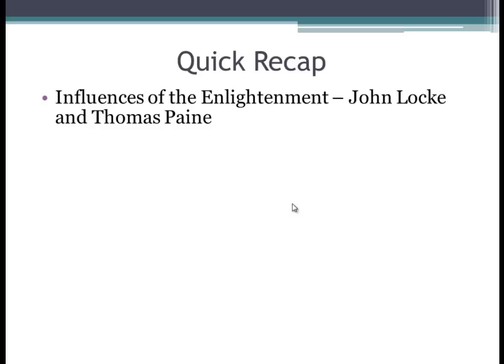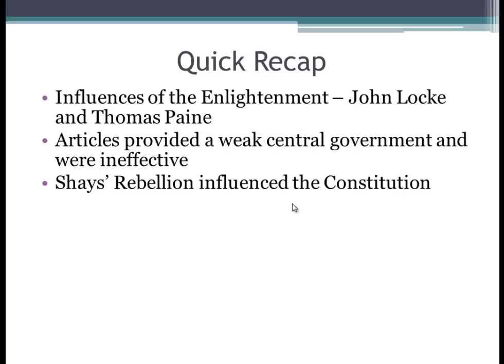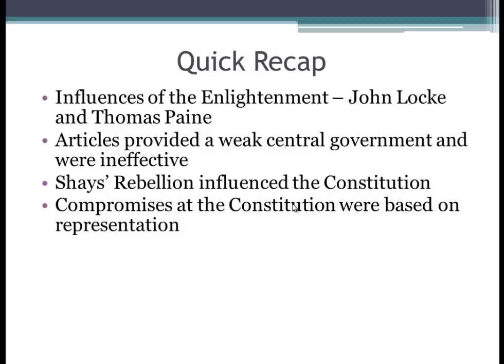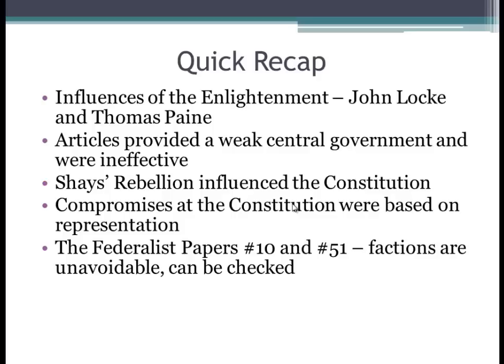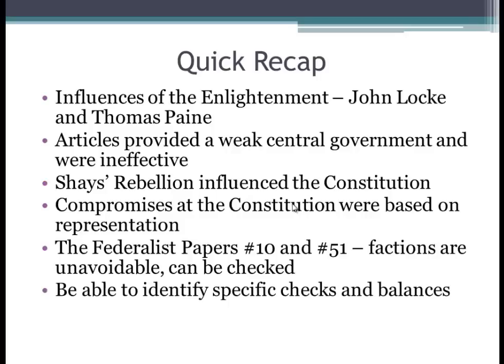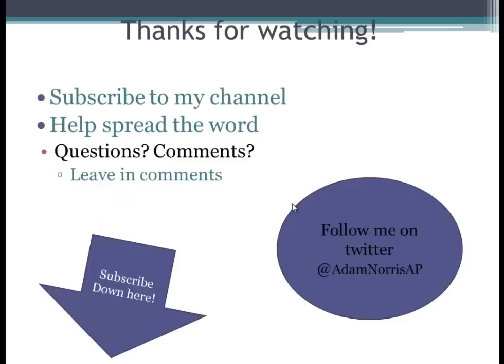Quick recap: know the influences of the Enlightenment, John Locke, and Thomas Paine on American government. The Articles provided a weak central government and were ineffective. Shays' Rebellion influenced the Constitution, especially in terms of needing a national military. Know the compromises at the Convention — the Connecticut/Great Compromise and the Three-Fifths Compromise. Federalist Papers 10 and 51: factions are unavoidable and can be checked through separation of powers. Be able to identify specific checks and balances each branch has. And Marbury v. Madison established judicial review. If you found this video helpful, please share it, leave comments below, or tweet me at AdamNorrisAP.